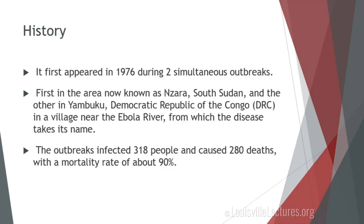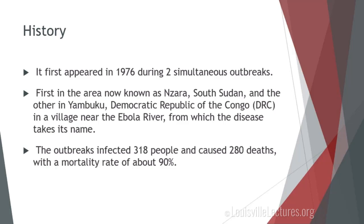So, history about Ebola. It first appeared in 1976. There were two simultaneous outbreaks at the time. The first was in an area in Africa known as Nzara in South Sudan, and the other was in Yambuku in the Democratic Republic of the Congo, or the DRC. It occurred in a village near the Ebola River, and that's where the disease actually got its name. The initial outbreak affected 318 people, caused 280 deaths, with a mortality rate of 90%.